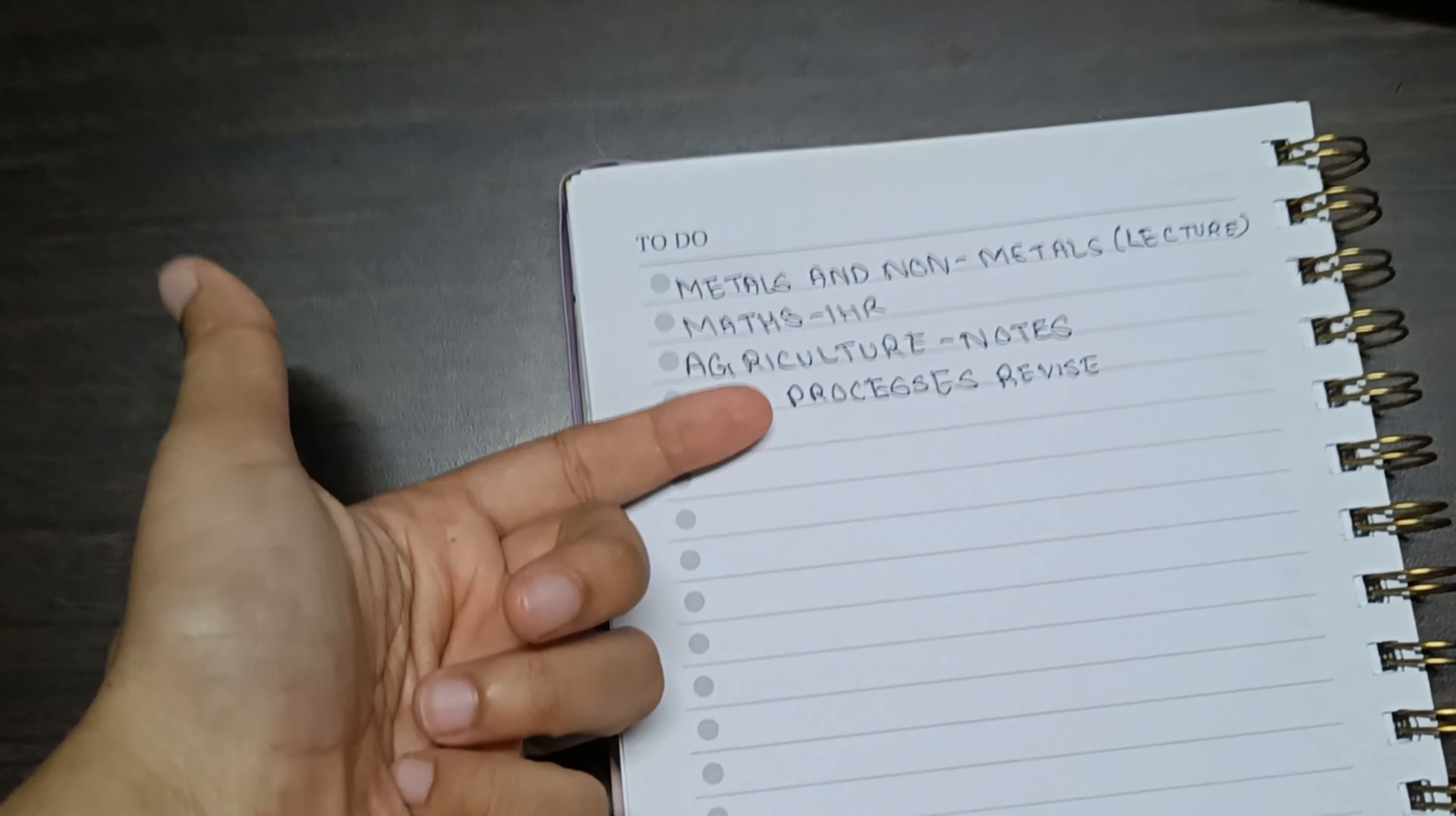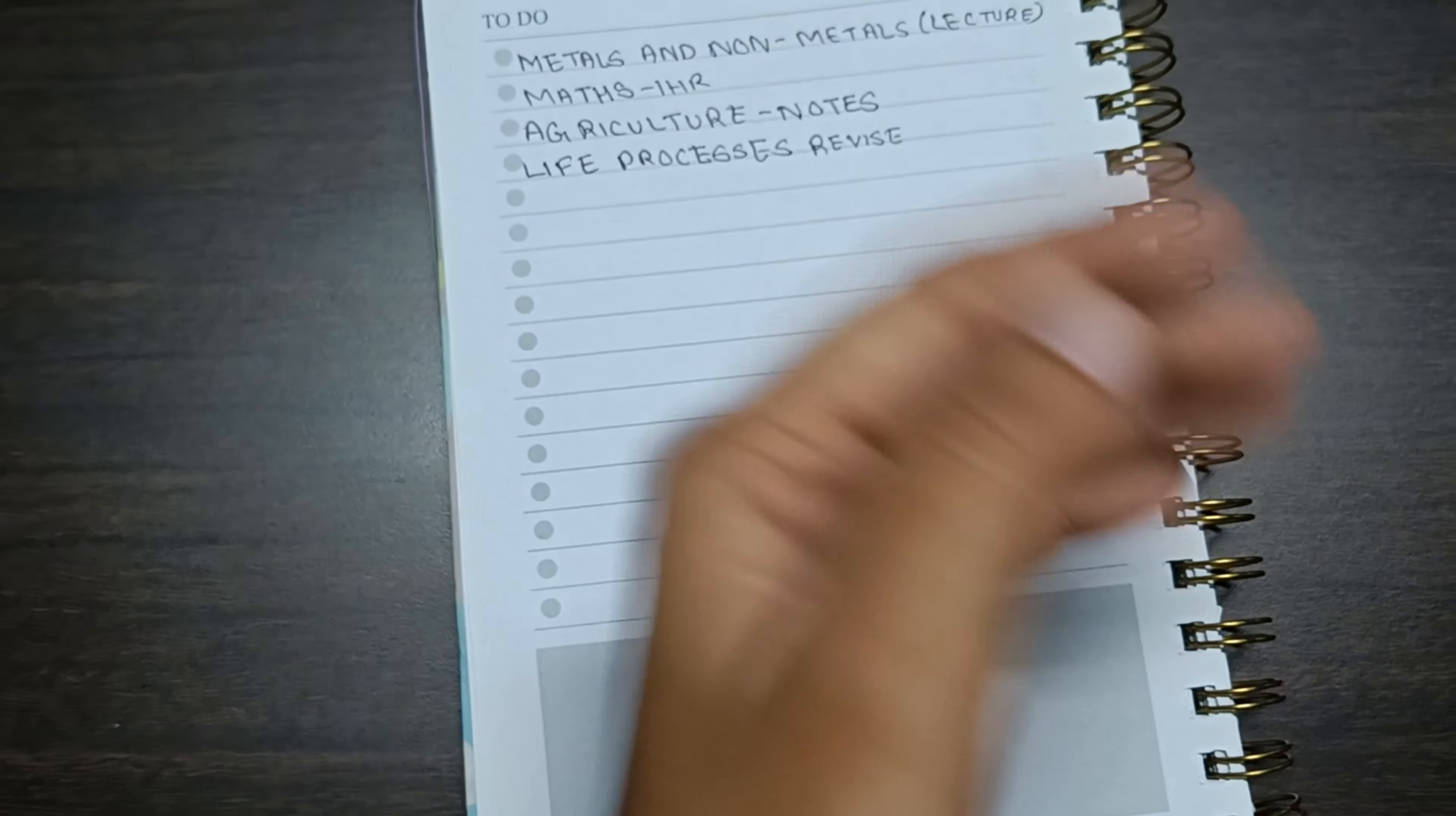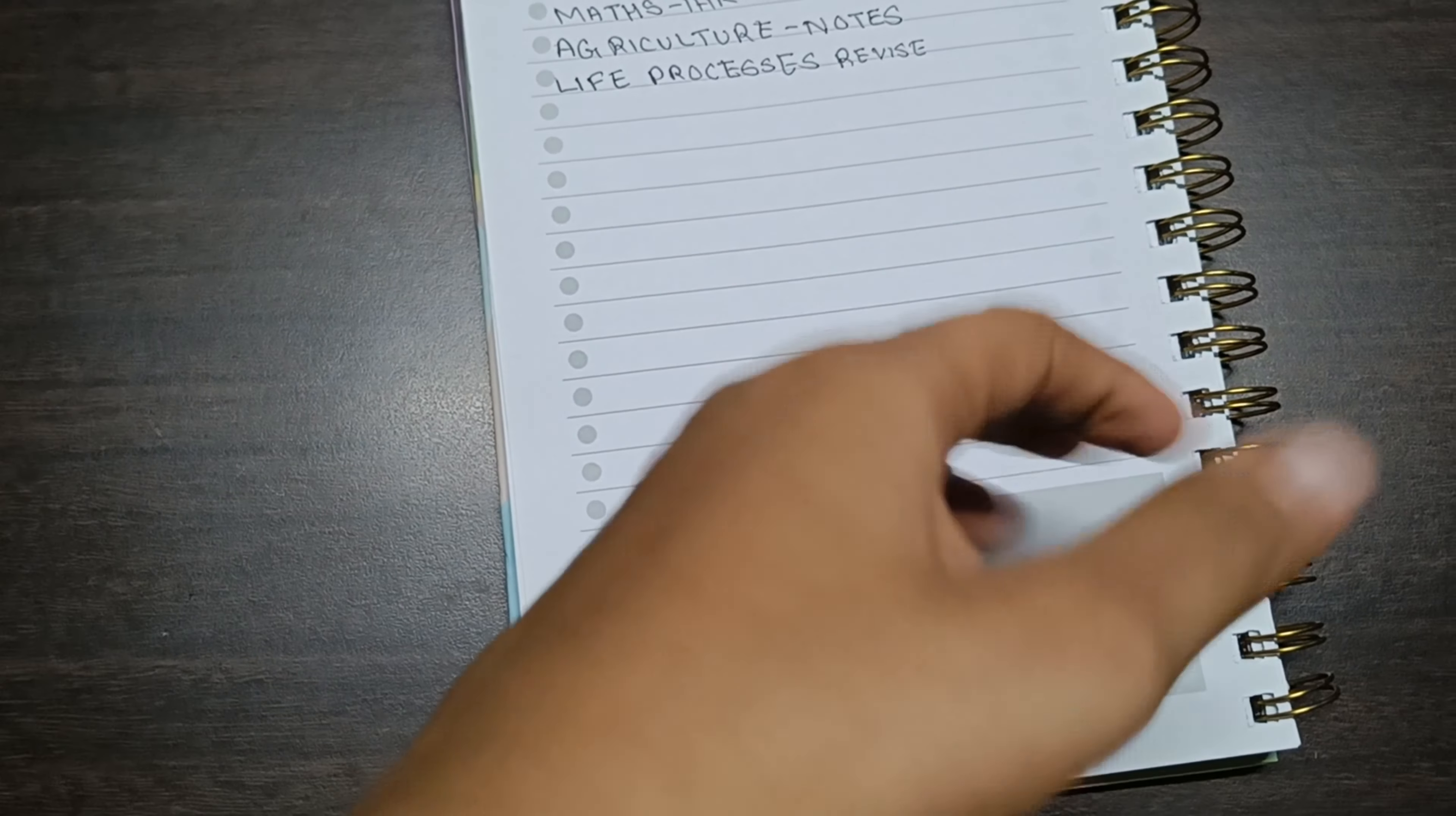So, this is my to-do list for today. I'm doing metals and non-metals. I have done half of the lecture, so I'm doing the rest half of the lecture. Then I'll do maths only for one hour today because I have a lot of agriculture notes to make and I have my copy checking tomorrow. And then I'll do the life processes revision. So yeah, let's start.